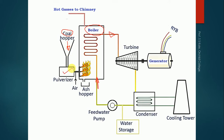The coal goes down into the pulverizer, where solid coal is converted into powder form. That powder is then supplied to the burner. For burning the coal, air or oxygen is required, which is supplied through an air inlet. The coal is burnt and high heat is generated inside the boiler.